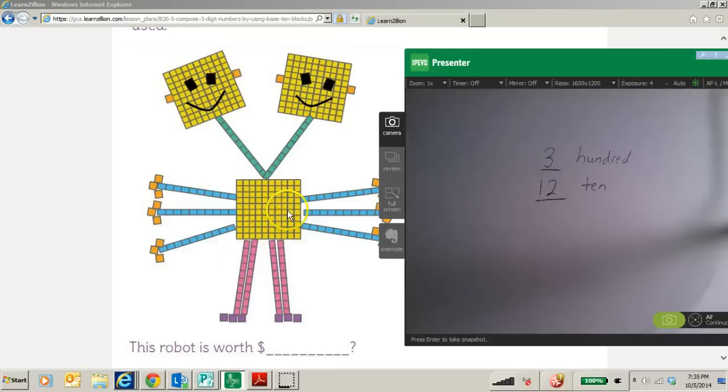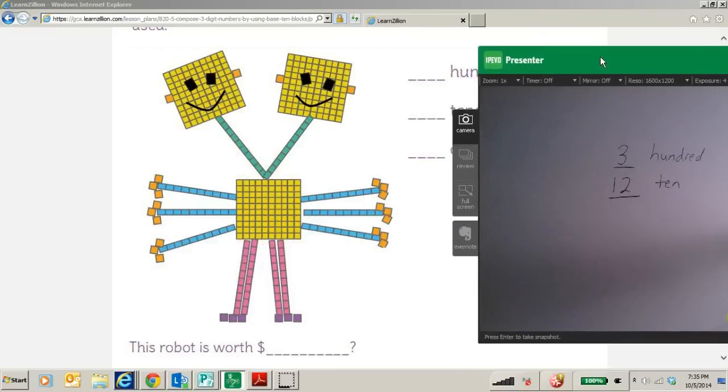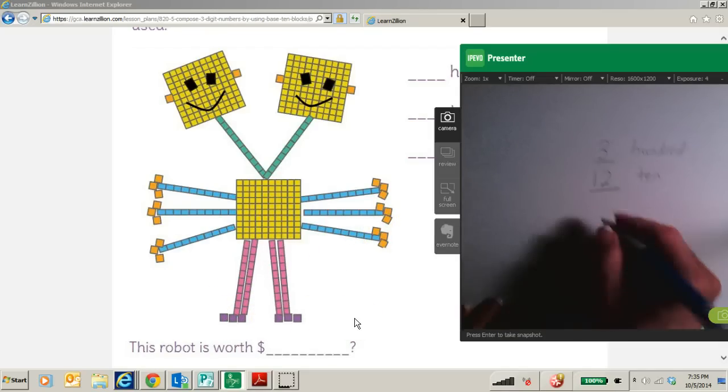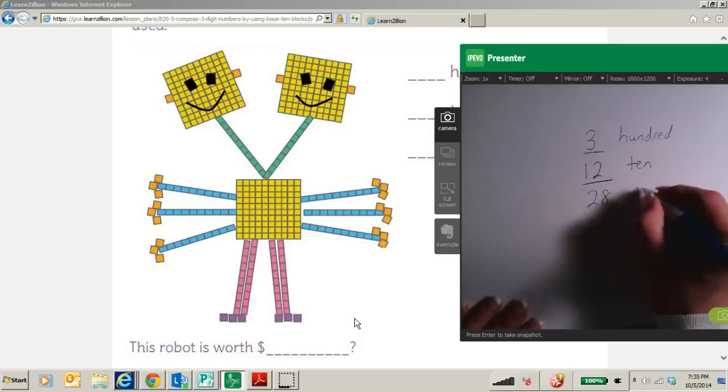We need to count the ears, the fingers. We have 1, 2, 3, 4, 5, 6, 7, 8, 9, 10, 11, 12, 13, 14, 15, 16, 17, 18, 19, 21, 22, 23, 24, 25, 26, 27, 28. So I have 28 ones.